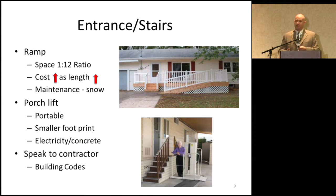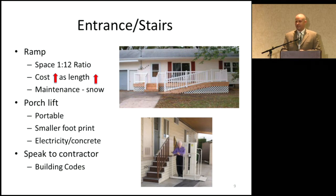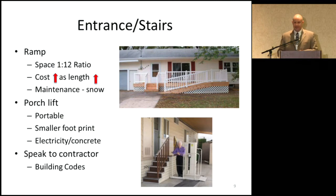Regardless of what you implement, make sure you speak to building contractors to ensure it's to code. The one-to-twelve ratio is the minimum — you may still find it too steep. Consider changing it to one-to-fifteen or one-to-eighteen, so every inch up you go out eighteen inches. Try out ramps at local public buildings to see what you find easy to get up and down.